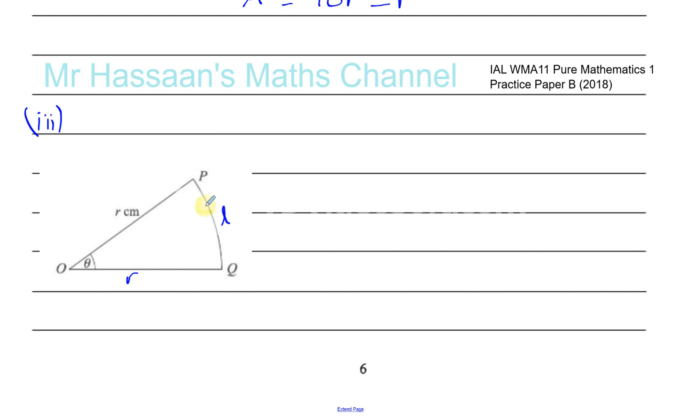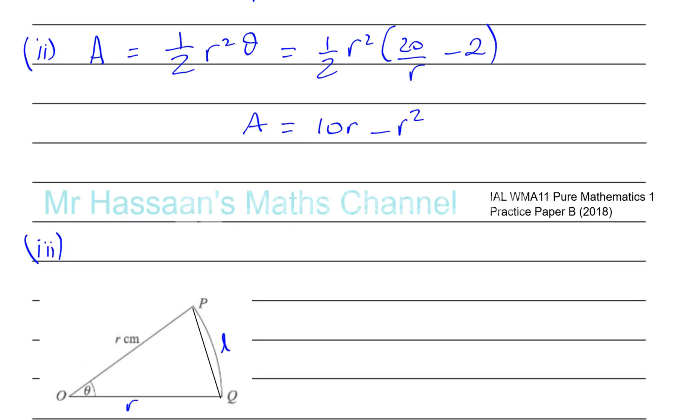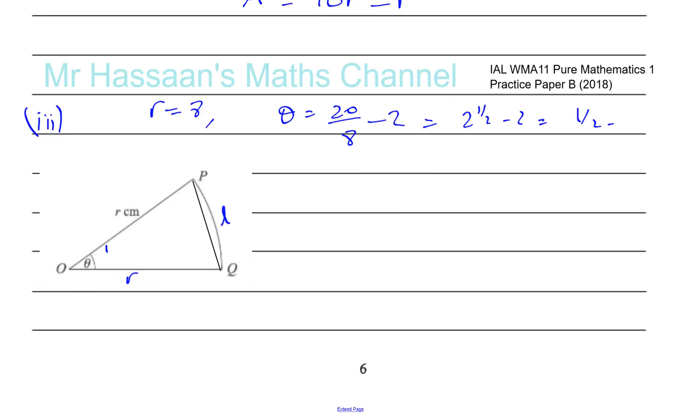So the chord PQ, a chord is a straight line which joins together two points on the circumference of a circle. So the chord PQ here is a straight line that goes from P to Q. Now, it says in the case where R equals 8. So we know that when R equals 8, theta is equal to 20 over 8 minus 2. Now 20 goes 8 goes into 2 times, remained 4, so it's 2 and a half minus 2, which is equal to a half. So the angle in radians is 0.5. So this angle is 0.5 and the radius is 8.